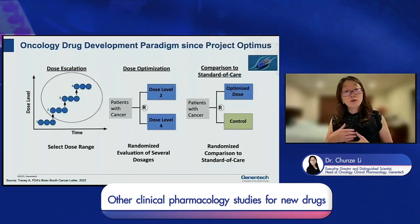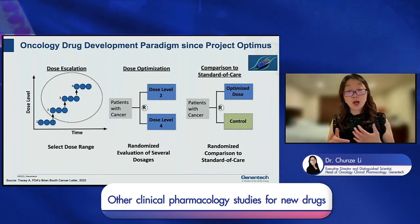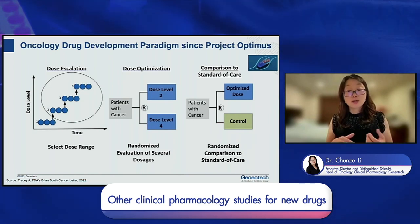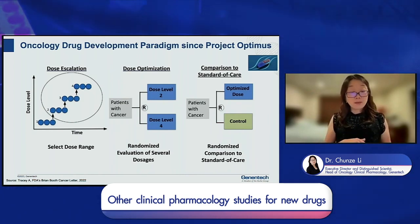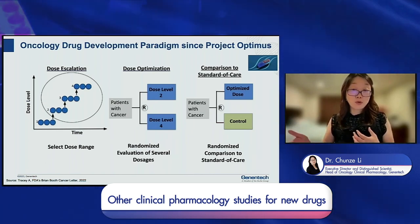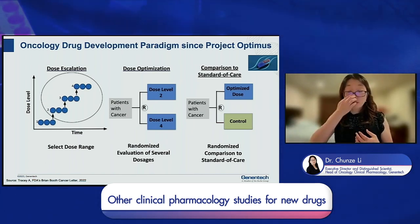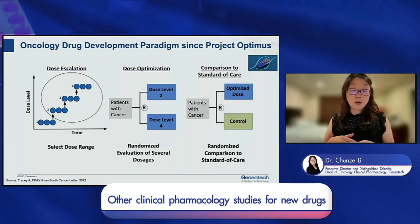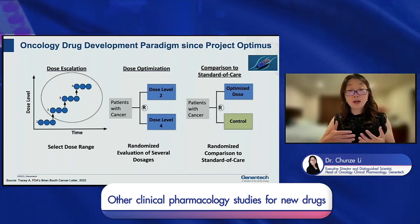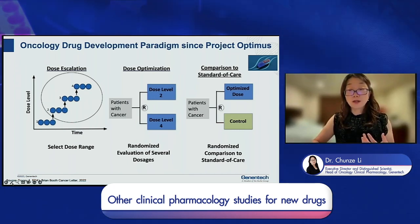I also want to briefly introduce the FDA's recent Project Optimus initiative, which highlights the importance of finding the right dose for quality products. In the past, due to competitive pressure and speed, people would identify the MTD and skip directly to registration. However, selecting too high a dose brings unnecessary toxicities that may actually compromise the benefit to patients. As a result, the FDA introduced a new paradigm: after dose escalation, they highly encourage sponsors to evaluate multiple doses in a randomized fashion so that an optimal dose can be identified for further testing in pivotal studies.